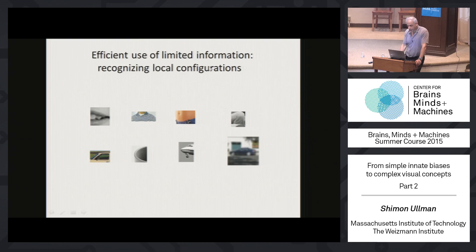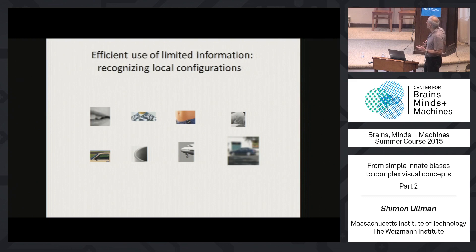When we look at objects in the world, people have worked a lot on object recognition. And we can recognize complete objects, but we can also recognize a very limited configuration of objects. So we are very good at using limited information, if this is what's available, in order to recognize what's in there.